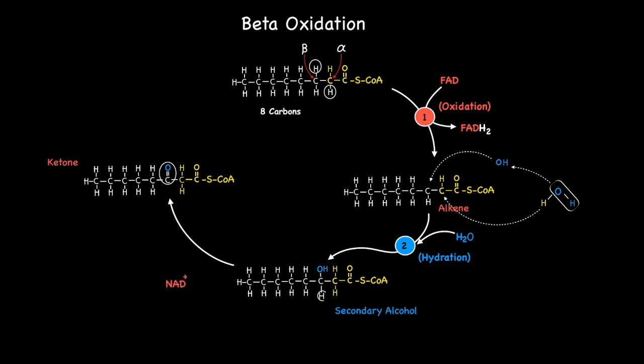The coenzyme NAD plus is responsible for this oxidation as it accepts the hydrogen from the beta carbon in the form of a negatively charged hydride ion to become reduced NADH. Some of you might be thinking why the hydrogen that breaks away from the beta carbon has a single negative charge.